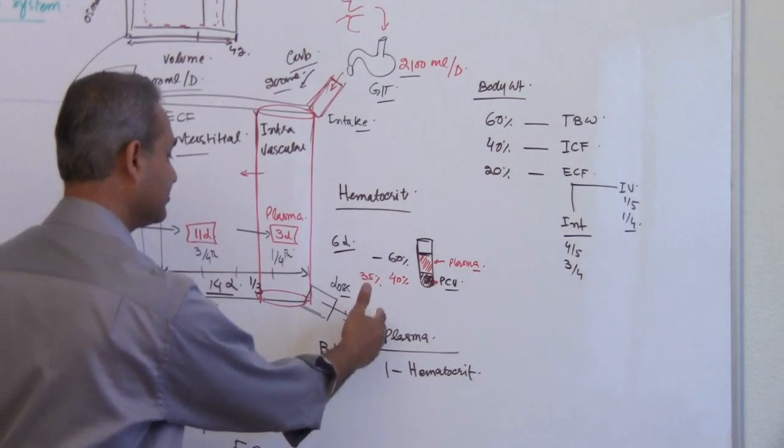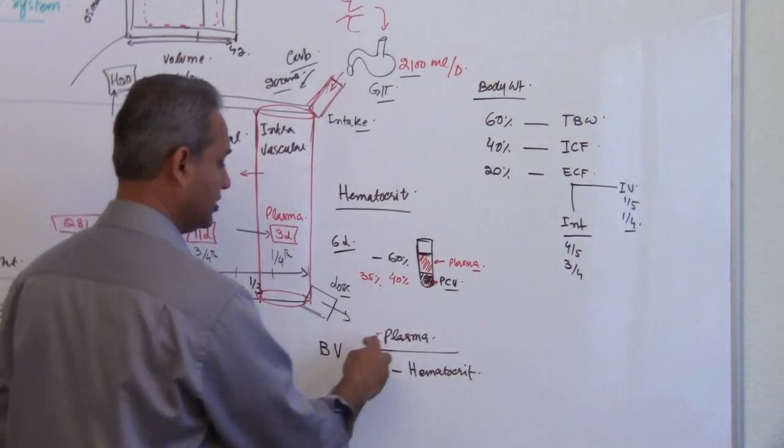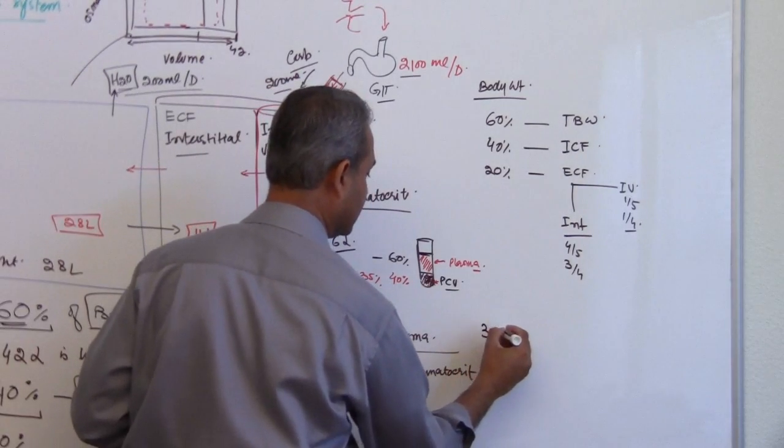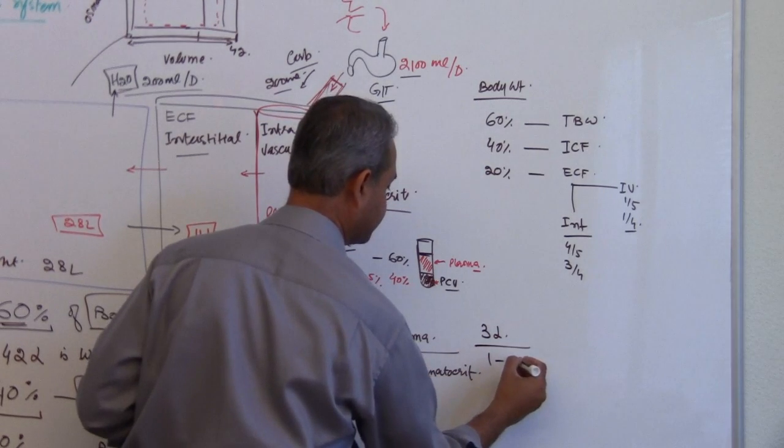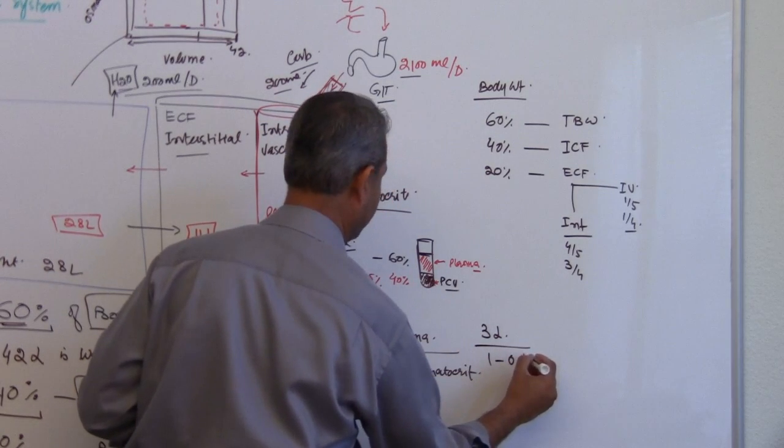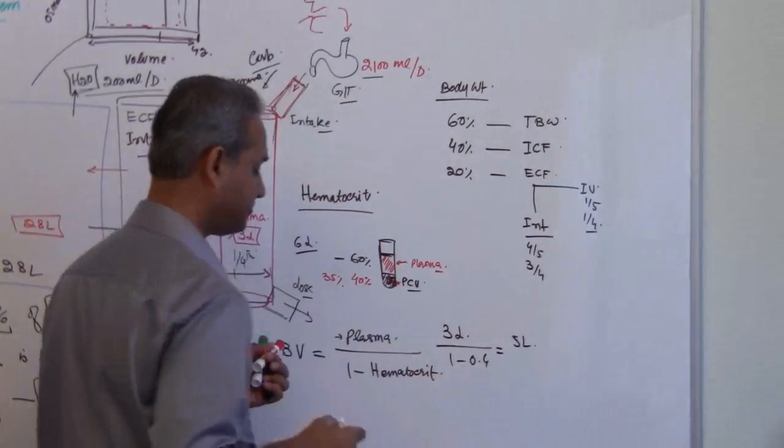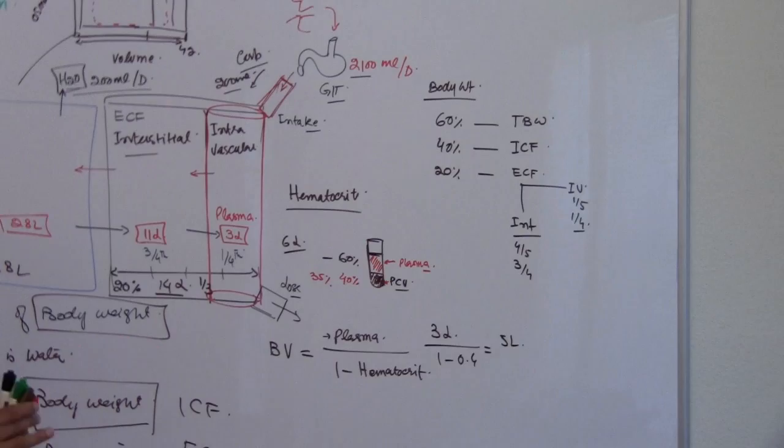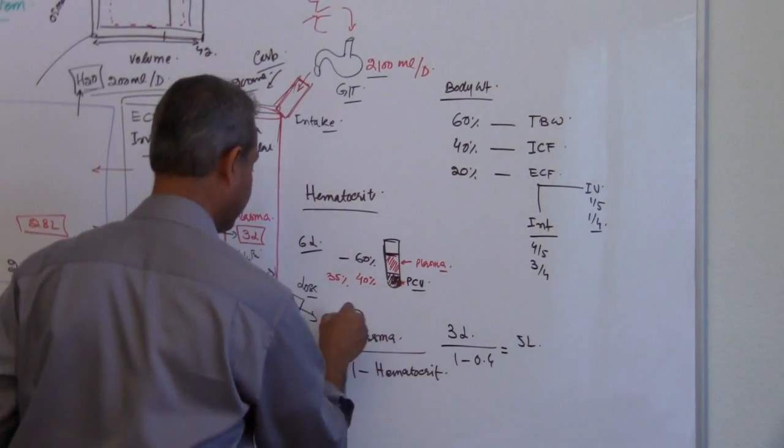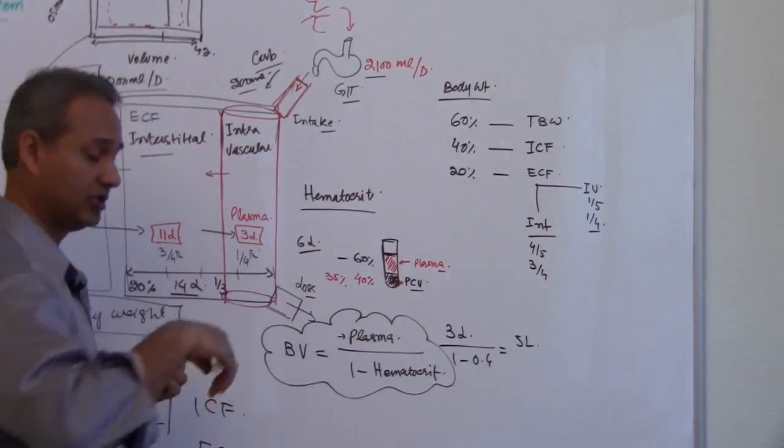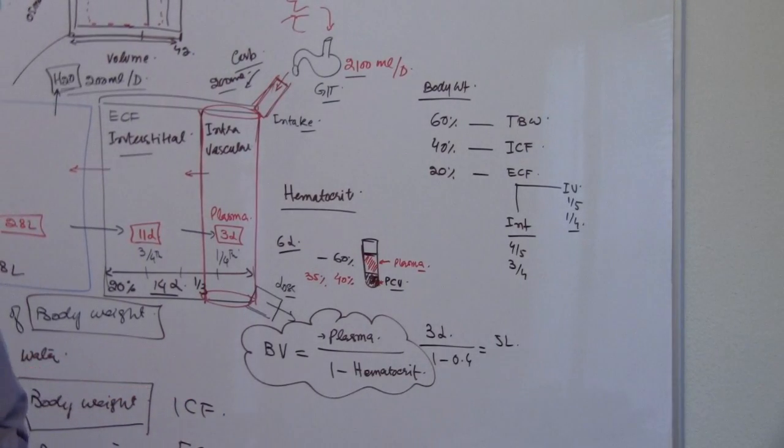The best way to work with this is to put the plasma—let's say 3 liter—divided by 1 minus 0.4 (that is the hematocrit), so that would come to be about 5 liters. Do not forget this formula. Write it down somewhere, use it, make up various values.